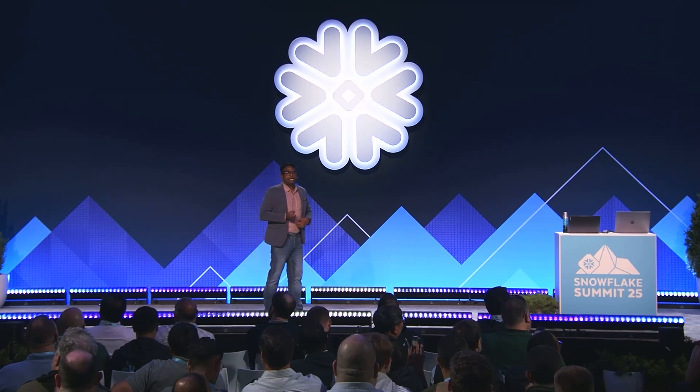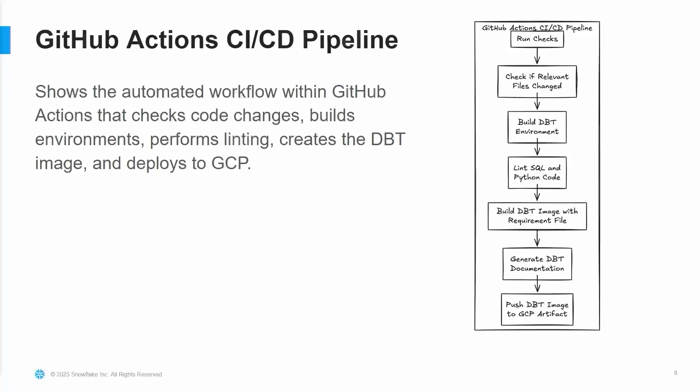The overall flow is: you make a DBT model change, it comes to a PR, the PR is approved, and it's running. The first step is to build the DBT environment so we can run all the checks — the documentation process, testing process, unit testing process. Then Lint SQL if it's a SQL file, do a Python lint if it's Python code. And if there's a DBT version change, you can deploy that on the fly as well. You don't have to upgrade DBT in a separate deployment lifecycle — you can take care of it within the same flow.